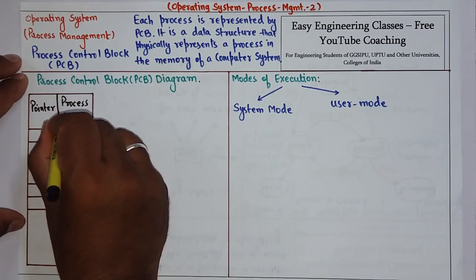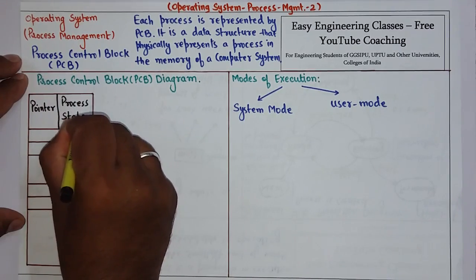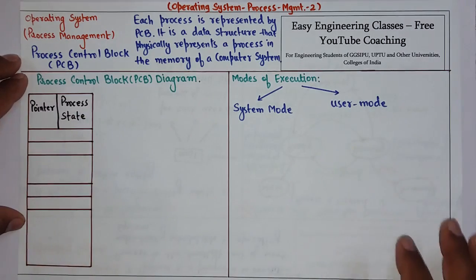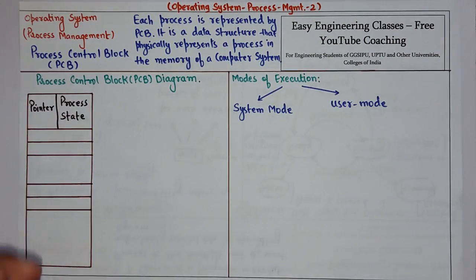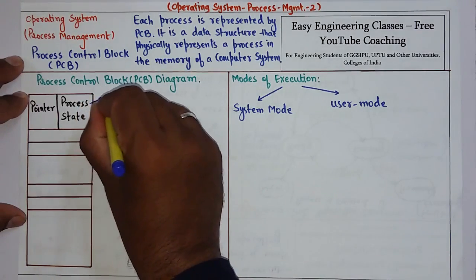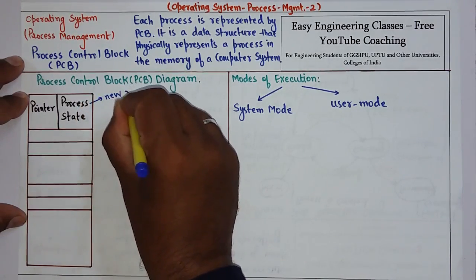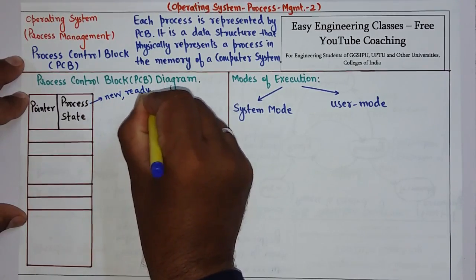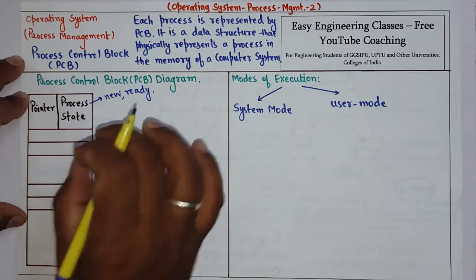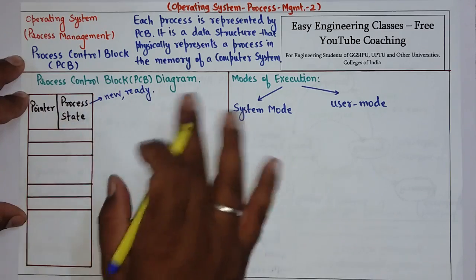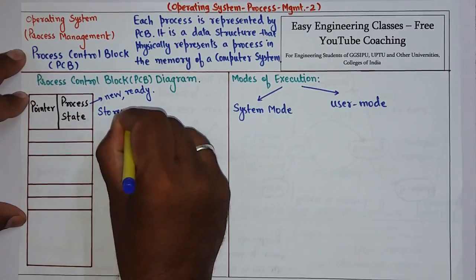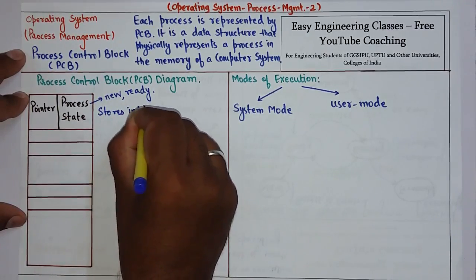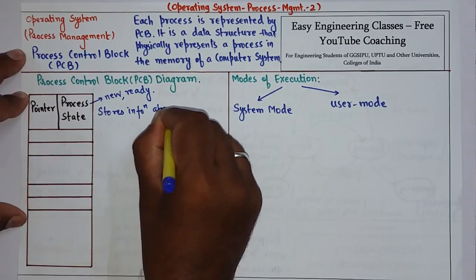There can be different states in which the process can be present. For example, a process can be in a new state, a ready state, and so on. The process state field of the PCB stores the information about the current state of the process.